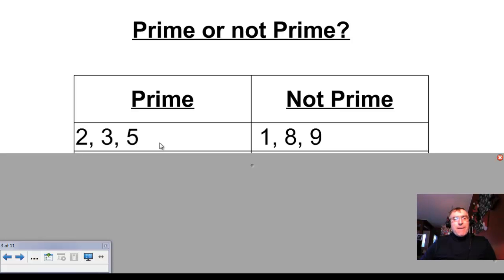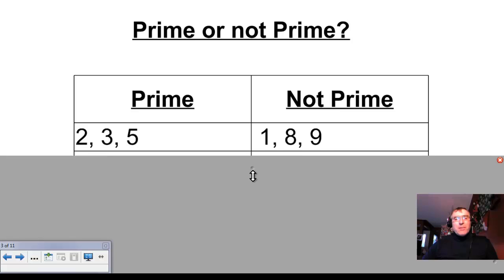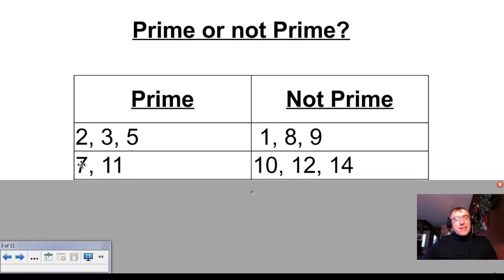I want you to think about that. On the other hand, numbers 1, 8, and 9 are not prime at all. So what do they have in common? Also, 7 and 11 are both prime numbers. Taking a look at all these prime numbers, what do they have in common? Please stop the tape and think about it for a few minutes and try to figure out what you think the rule is. On the other side, 10, 12, and 14 are not prime.